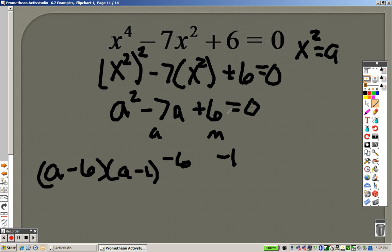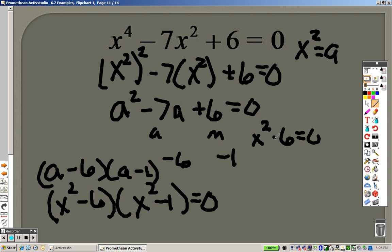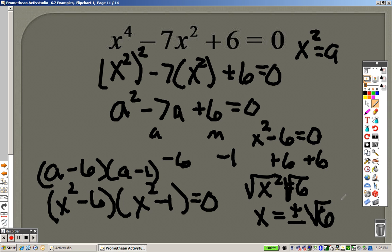Because now, I can substitute that back in, so I actually end up with my two factors as x squared minus 6 and x squared minus 1. But keep in mind, they equal 0. So, what that means is take each of those, x squared minus 6, and set it equal to 0. And let's solve that one. So, to solve that, I would add 6 to both sides. So, I get x squared equals 6. I'd square root to get x equals plus or minus the square root of 6. So, those are two answers right there.